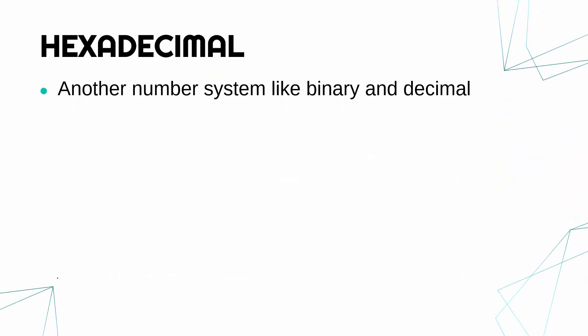Hexadecimal is another number system like binary and decimal, so they are all equivalent. We use decimal in our lives, computers use binary all the time, and hexadecimal is like a nice bridge between binary and decimal. As you can probably get a sense of from the name, it uses 16 digits. Hex or hexa as a word root is 6, and deca is 10, so 10 plus 6 is 16. That's why it's called hexadecimal — it has 16 digits. Binary has 2, decimal has 10.